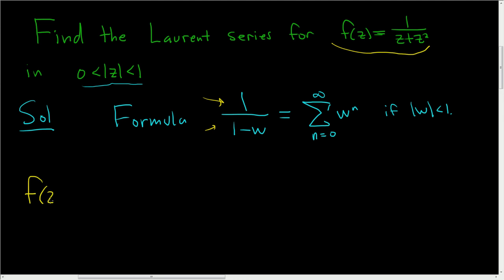So f(z) equals 1/(z + z²). We know that the modulus of z is less than 1, so we can just somehow manipulate this to make it look like this.